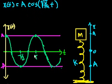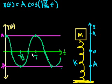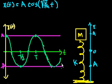Remember, we said that after T seconds it gets back to its original position, and then after another T seconds it gets back again. Let's figure out what this T is — that's essentially the period. What's the period of a function? It's how long it takes to get back to your starting point, or how long it takes for the whole cycle to happen once. So what is this T?